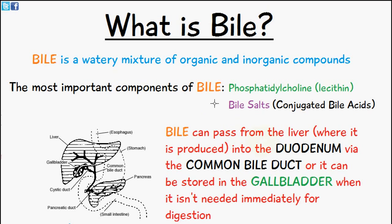Bile is a watery mixture of organic and inorganic compounds. It can pass from the liver — where it's produced — into the duodenum via the common bile duct, or it can be stored in the gallbladder when it isn't needed immediately for digestion. When it is required, it passes through the common bile duct into the duodenum.